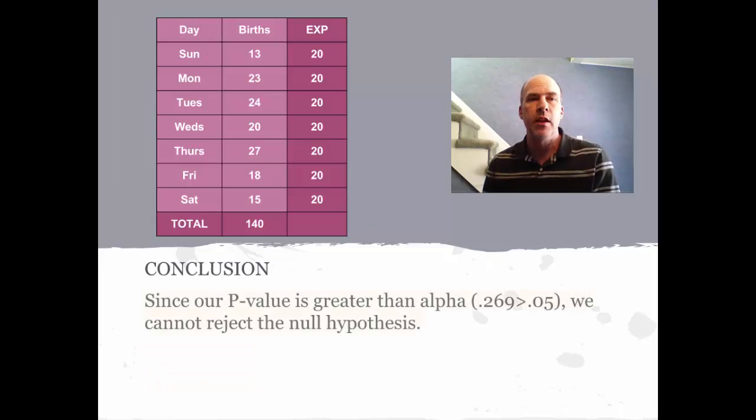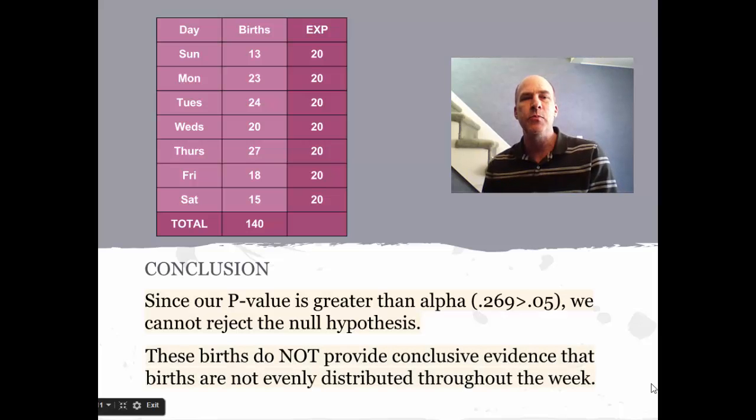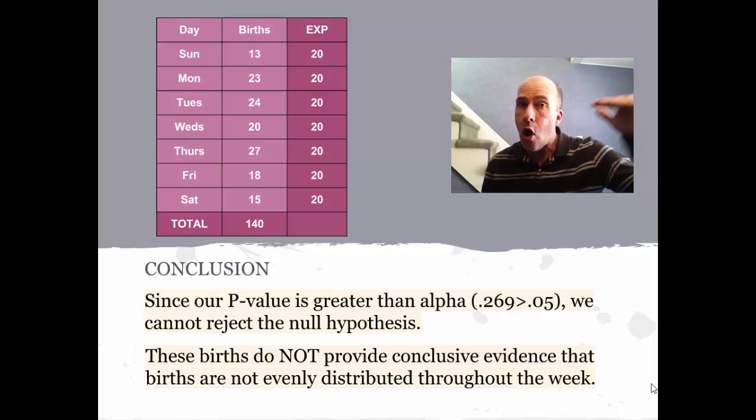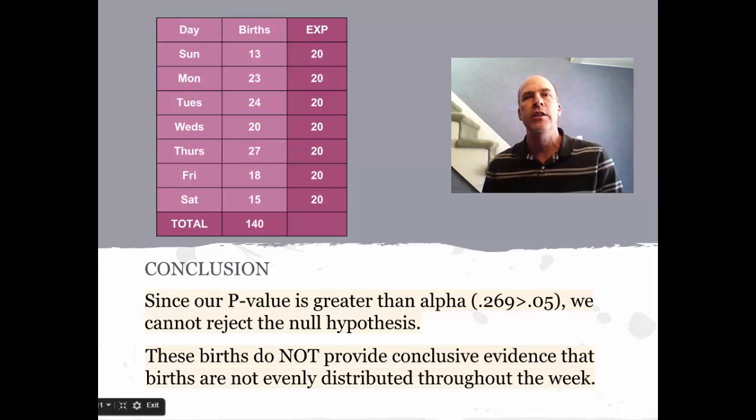Now we can do our conclusion. Since our p-value is greater than alpha—0.269 is greater than 0.05—we cannot reject the null hypothesis. These births do not provide convincing evidence that the births are not evenly distributed throughout the week. Keep in mind, I'm not accepting the null. This does not provide evidence that they are equally distributed throughout the week; it's just that I can't conclude that they are not equally distributed throughout the week. We have to be very careful with our conclusions.